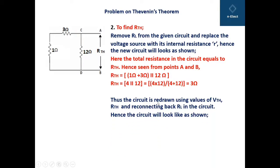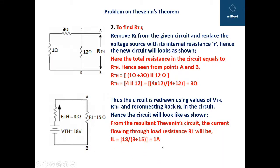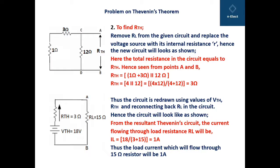The circuit is now redrawn using VTH equals 18 volts and RTH equals 3 ohms, with RL of 15 ohm reconnected. The load current flowing through the 15 ohm resistance is 18 divided by 3 plus 15, which equals 1 ampere. Thus the load current through the 15 ohm resistance is 1 ampere according to Thevenin's theorem. I hope the concept is clear — thank you.